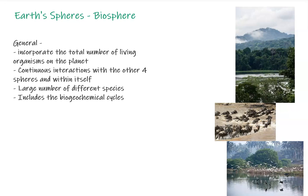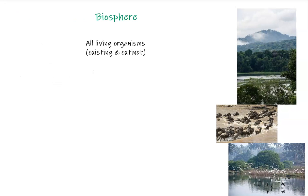We also look at the biogeochemical cycles — all of the cycles involved, including the carbon cycle, the phosphorus, nitrogen, and potassium cycles, which are the most common ones. You can also include the water cycle and the rock cycle, because it involves different elements within minerals that create rocks and go through the cycle.